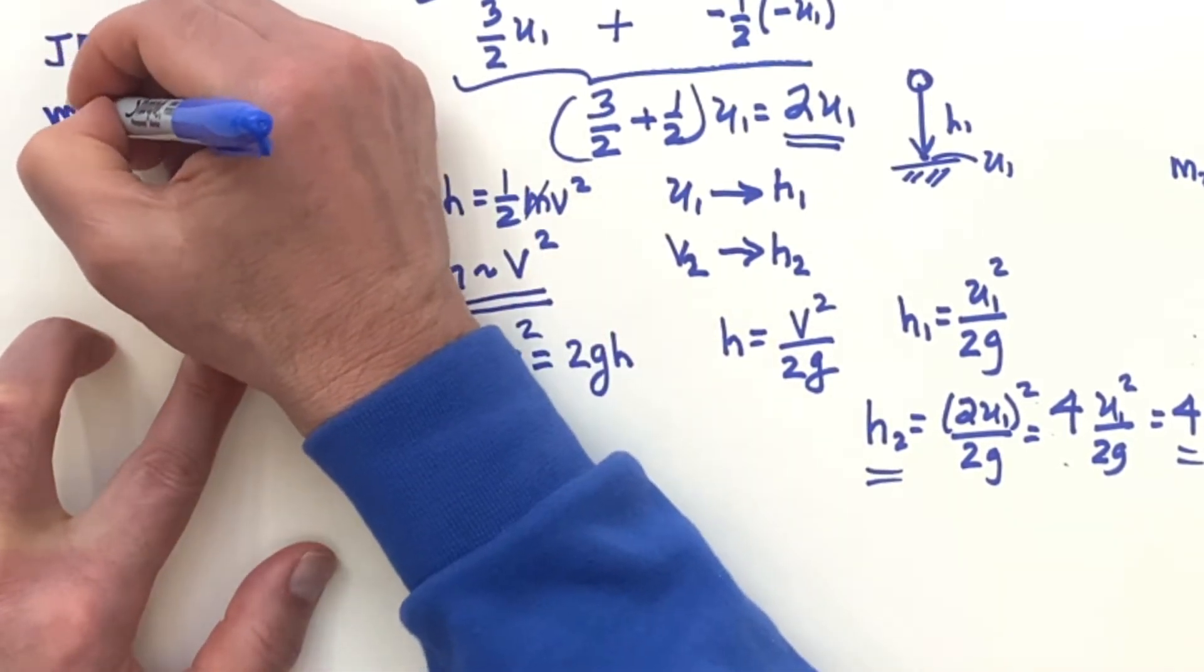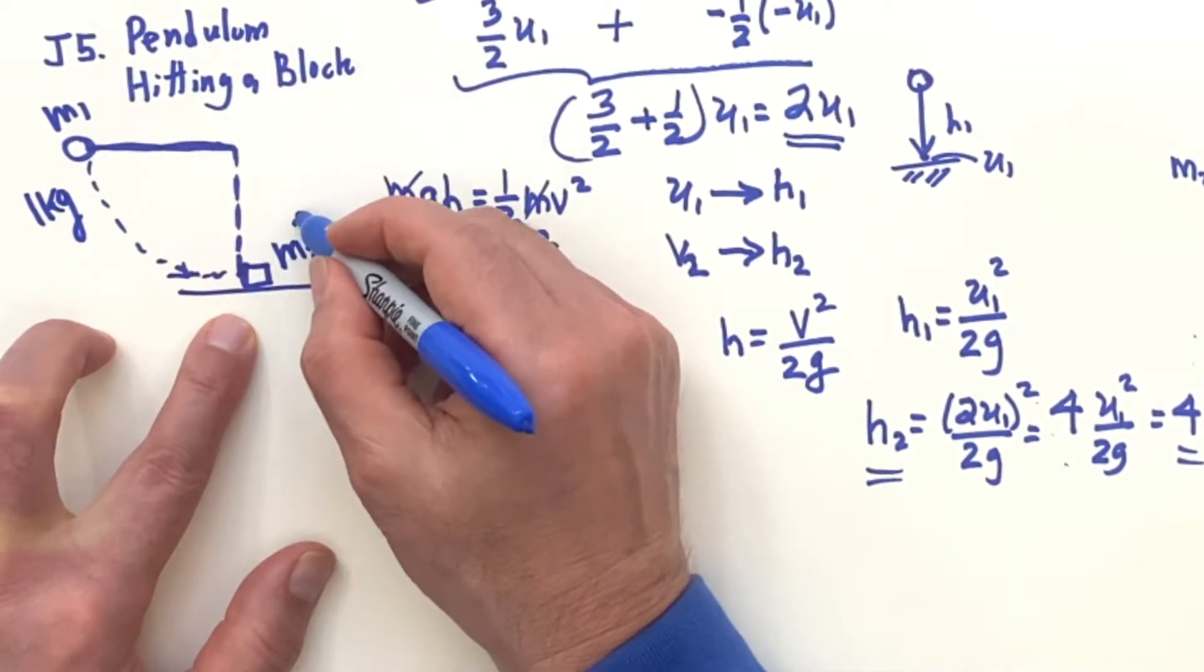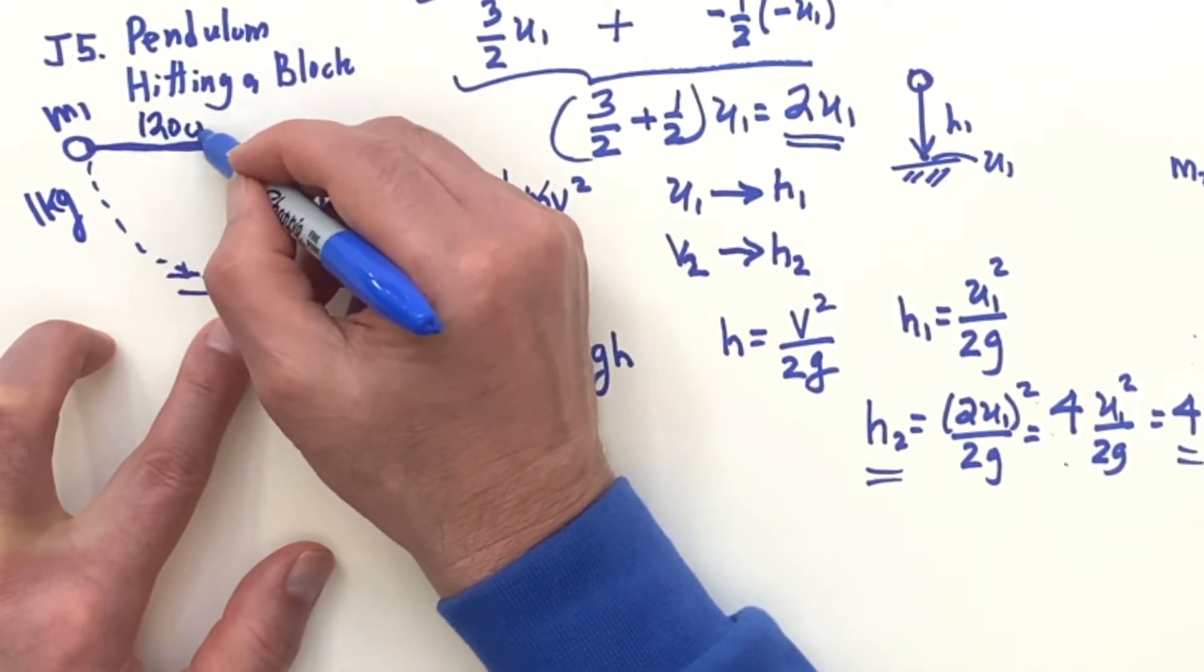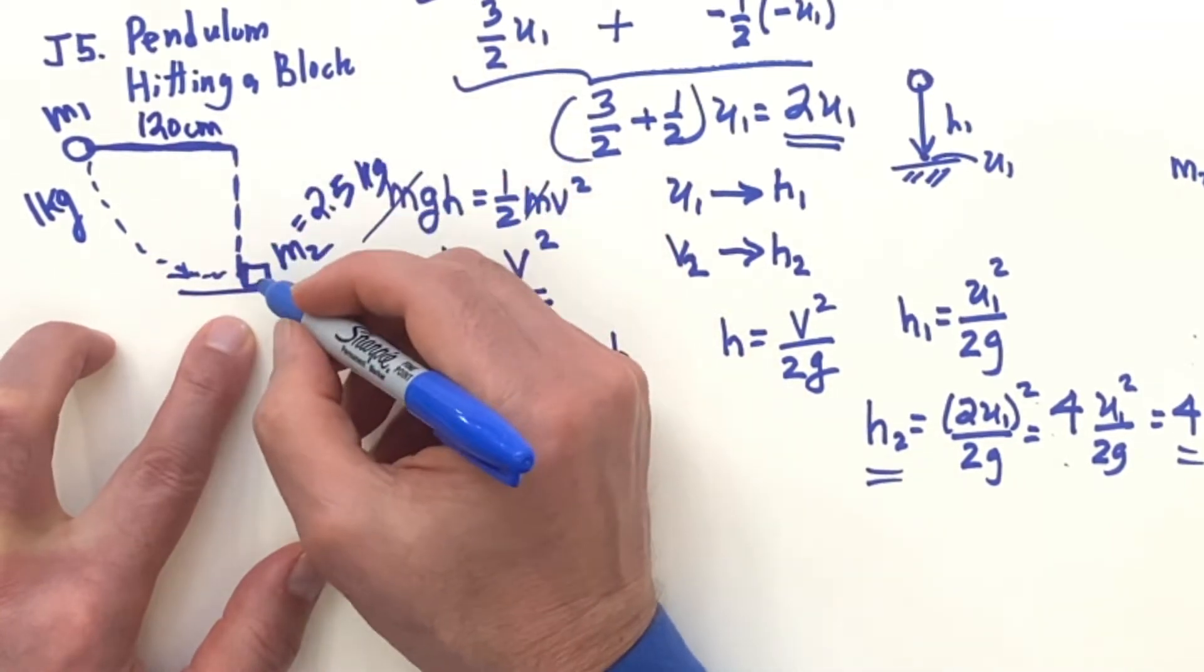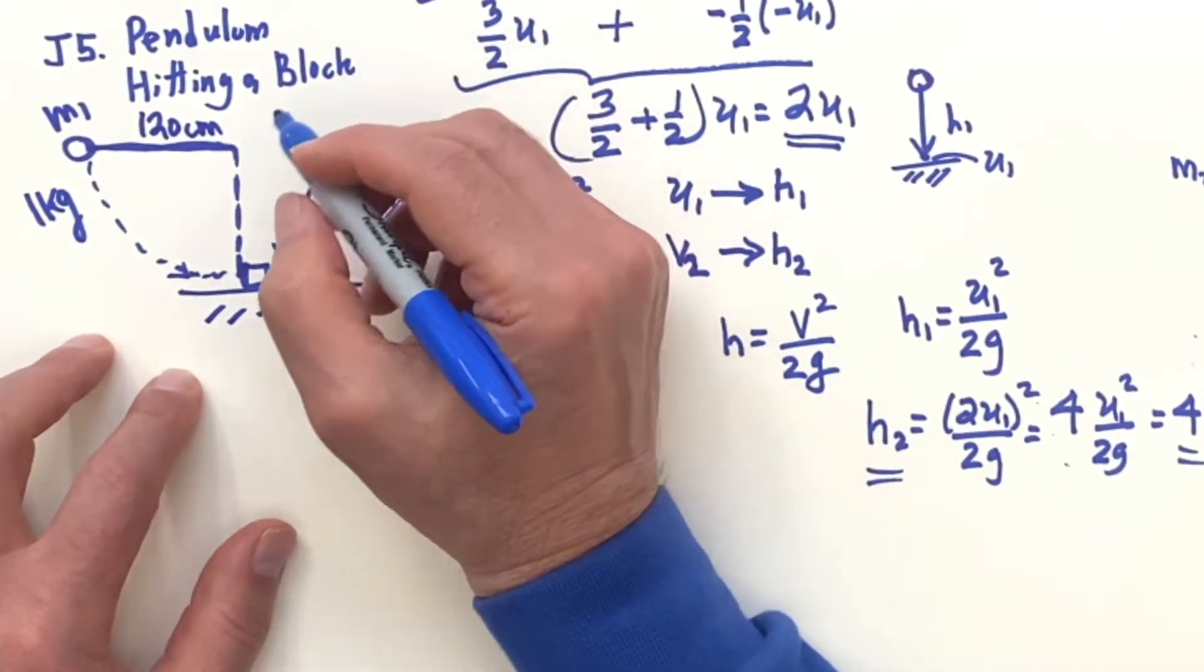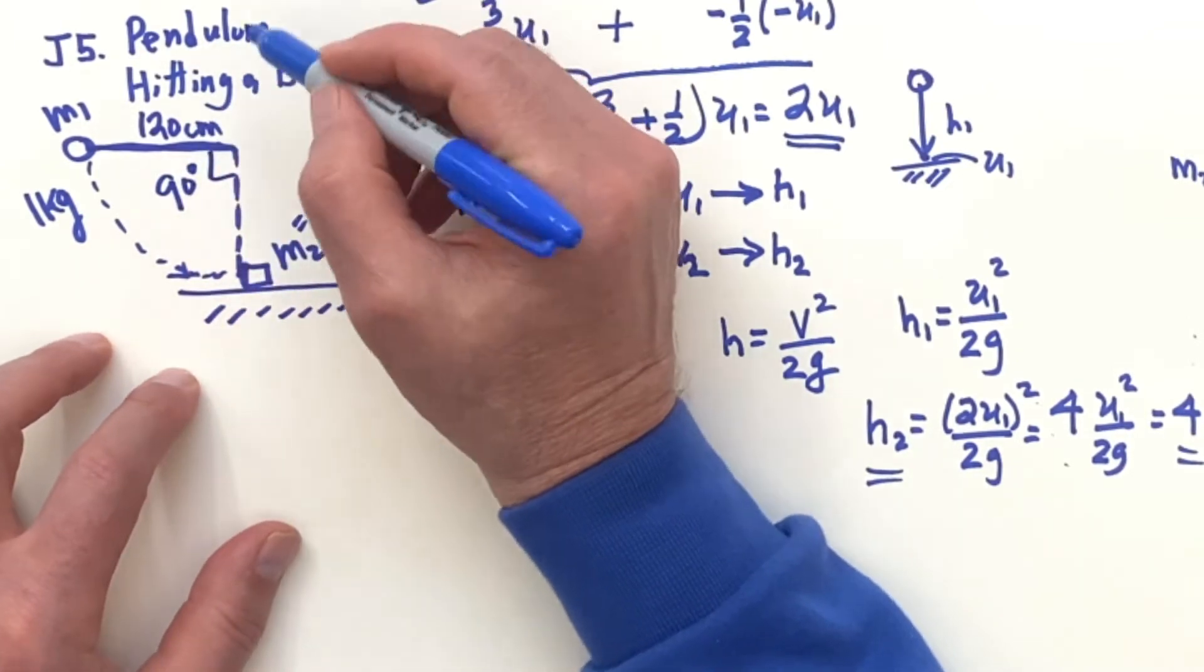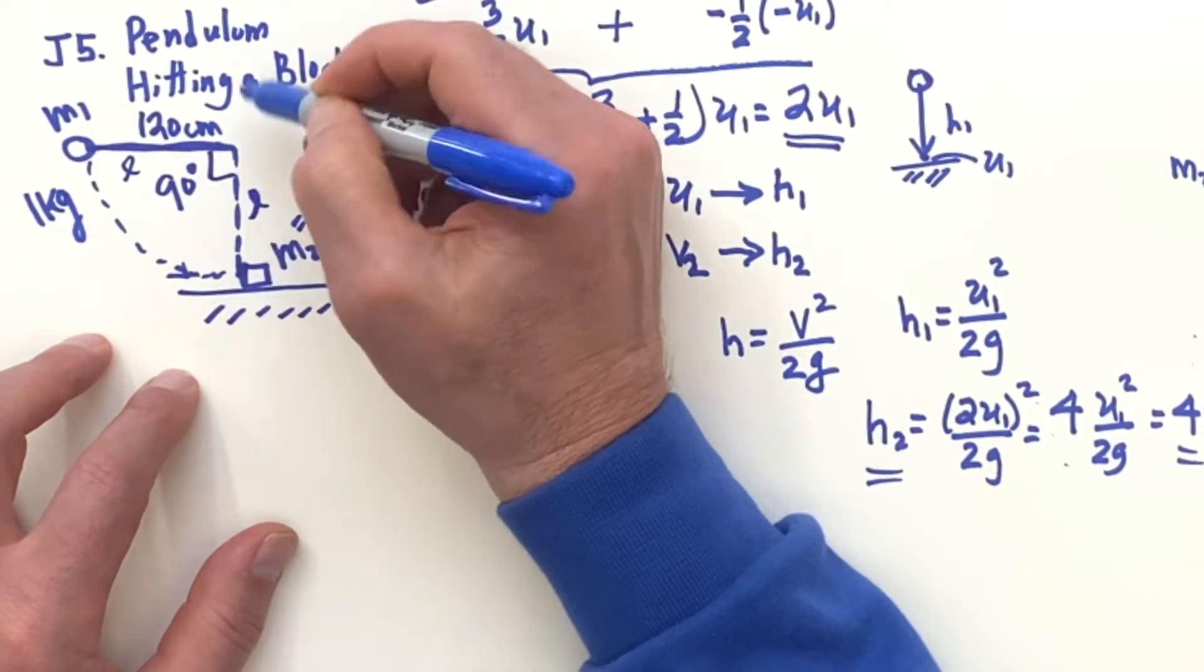Here's mass one. This would be one kilogram. This one here is going to be 2.5 kilograms and 120 centimeters. It's going to come down and hit this, and there's no friction here. And we can take that to be 120.0. So you're going to come out here with 90 degrees and let go. This is the length of the pendulum, 120 and 120.